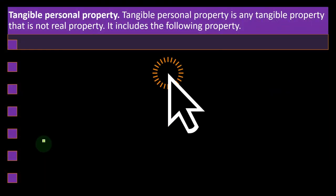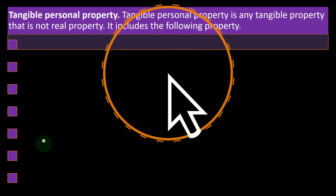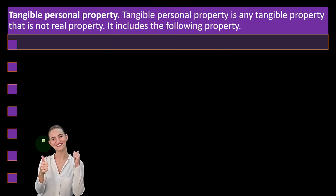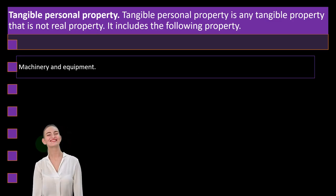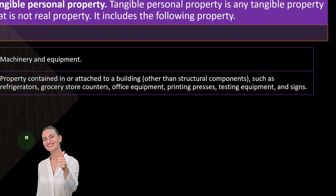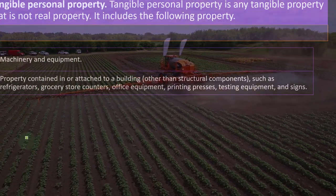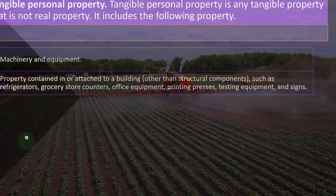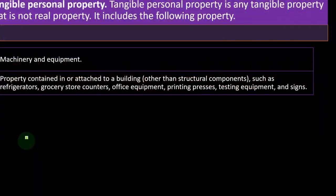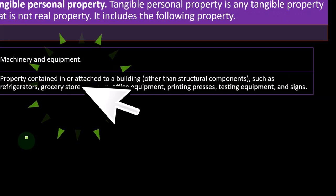Tangible personal property is any tangible property that is not real property. It includes the following: machinery and equipment — one of the more common types of examples. Also property contained in or attached to a building, other than structural components.